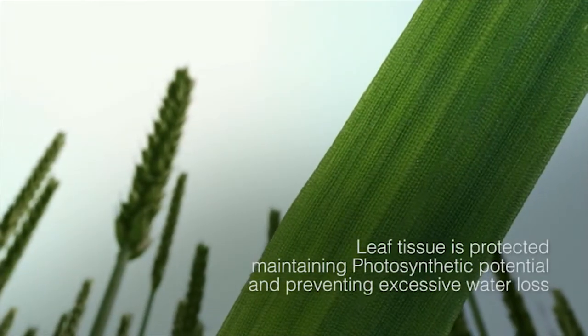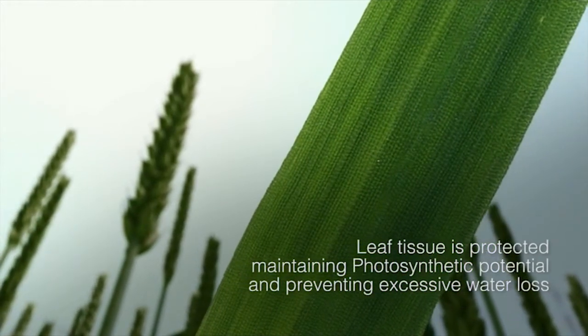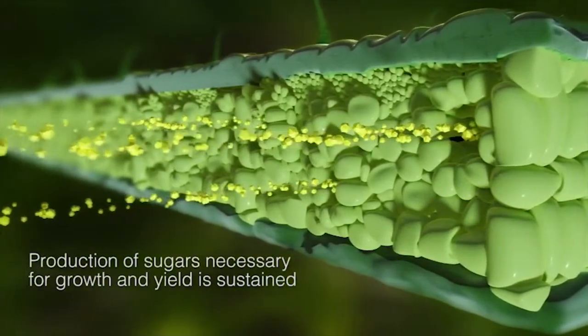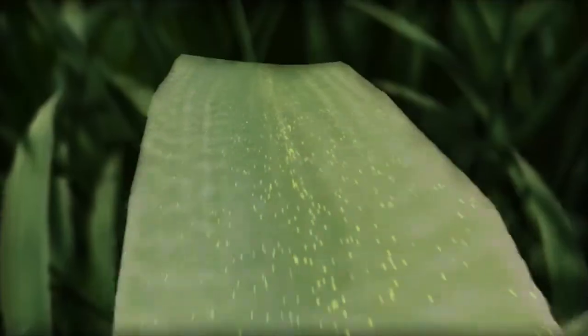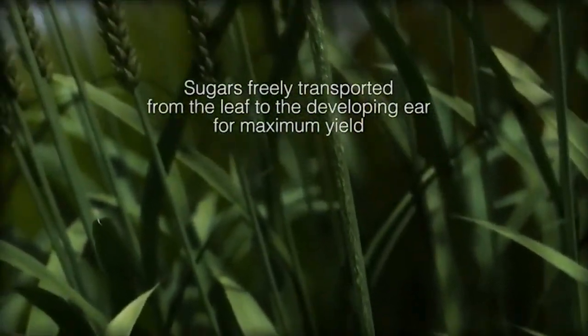Leaf tissue is protected, maintaining photosynthetic potential and preventing excessive water loss. The production of sugars necessary for growth and yield is sustained, and sugars can be freely transported from the leaf to the developing ear for maximum yield.